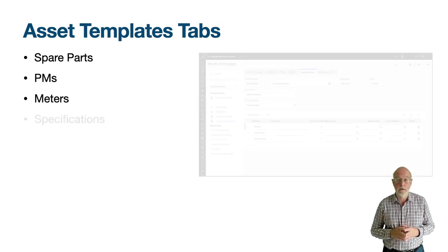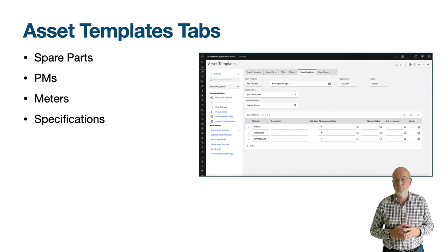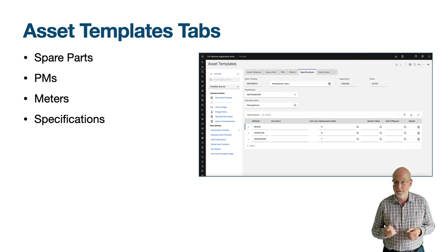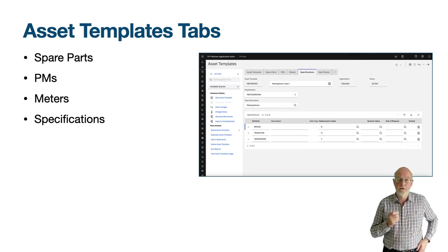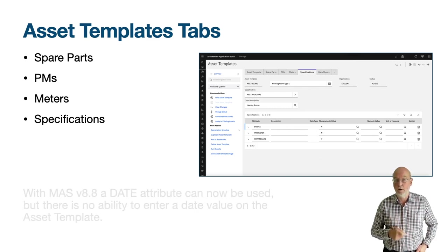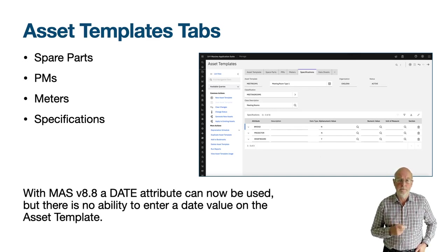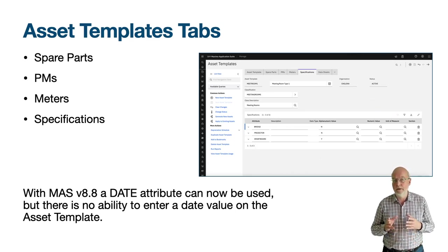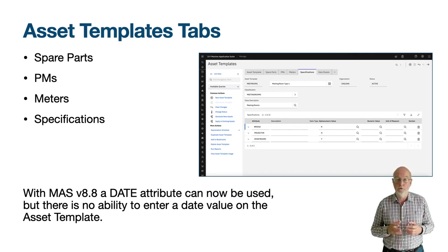The fourth tab you are likely to use is the specifications tab. You will need to enter a classification that has been set up against the 'use with' object of asset — there is no classification object for asset templates; it uses the same classifications defined for assets. The classification attributes are copied to the asset template and you can then enter alphanumeric, numeric, or table values. Notice there is no new row button on the specifications table window, as this template ought to be aligned with a specific classification. If an additional attribute is needed, you must decide whether to create an additional classification or add the attribute to the existing one.